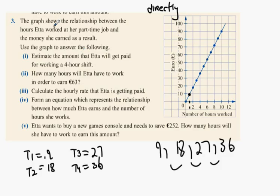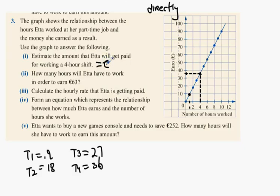Estimate the amount that she will get paid for working a four-hour shift. What you do is go to four hours on your graph, go up and then directly across. What value is that? It's between 30 and 40 but looks slightly above halfway. 36 or 37, both answers are acceptable. So we'd make 36 euro for that one.